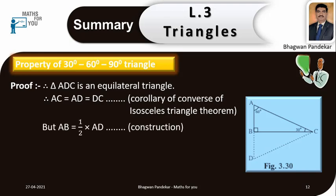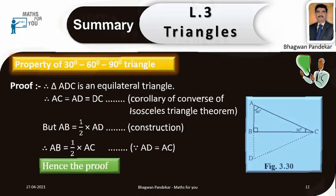Therefore, AC is equal to AD is equal to DC — corollary of isosceles triangle theorem. But AB is equal to 1/2 × AD by construction. Therefore, AB is equal to 1/2 × AC, since AD is equal to AC. Hence the proof.